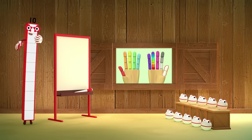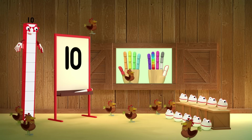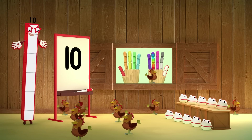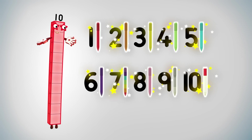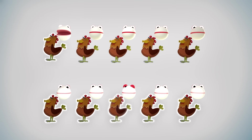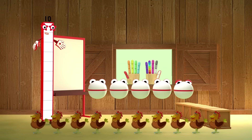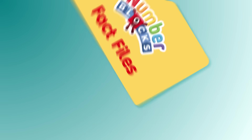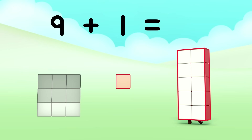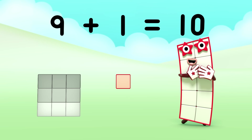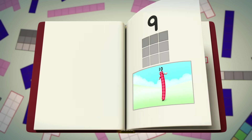Ten number blobs and me, counting everything we see, writing with a pen, plucking at the hand. Ten number blobs and me — one, two, three, four, five, six, seven, eight, nine, ten. Ten pens! One, two, three, four, five, six, seven, eight, nine, ten — ten pens, ten number blobs and me. And me. 9 plus 1 equals 10. Say it again. I am 10.